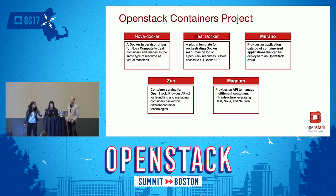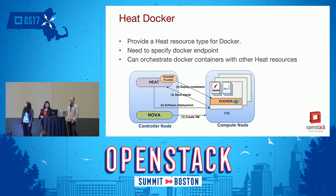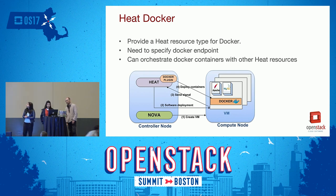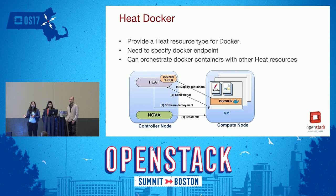HeatDocker provides a Heat resource for containers, letting you run containers on the OpenStack ecosystem. You write a template for your OpenStack containers — for example, specifying NGINX servers with image details — and specify where your Docker is running. Heat will then run your application on any kind of infrastructure you want. The advantage of using HeatDocker is that you have the option of running your containers inside a VM or any bare metal node.